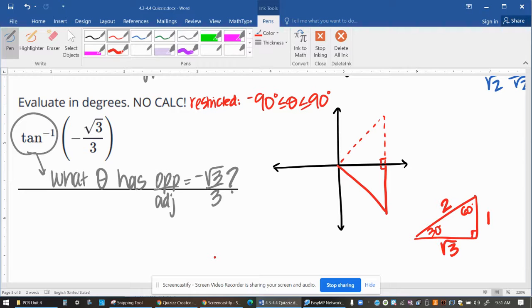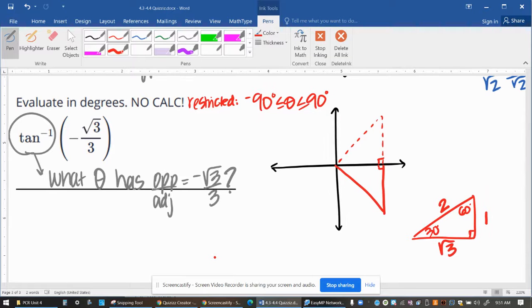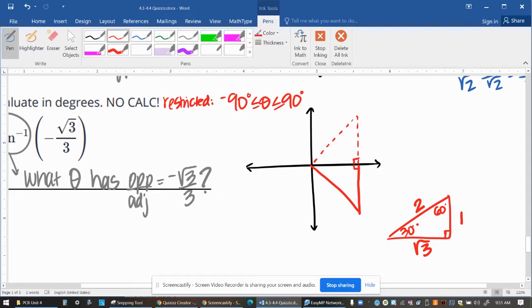So as I considered my possible reference angles, I thought about a 30-60-90 triangle. And I realized that if I use 30 as my reference angle, I'd get opposite over adjacent, which is root 3 over 3.